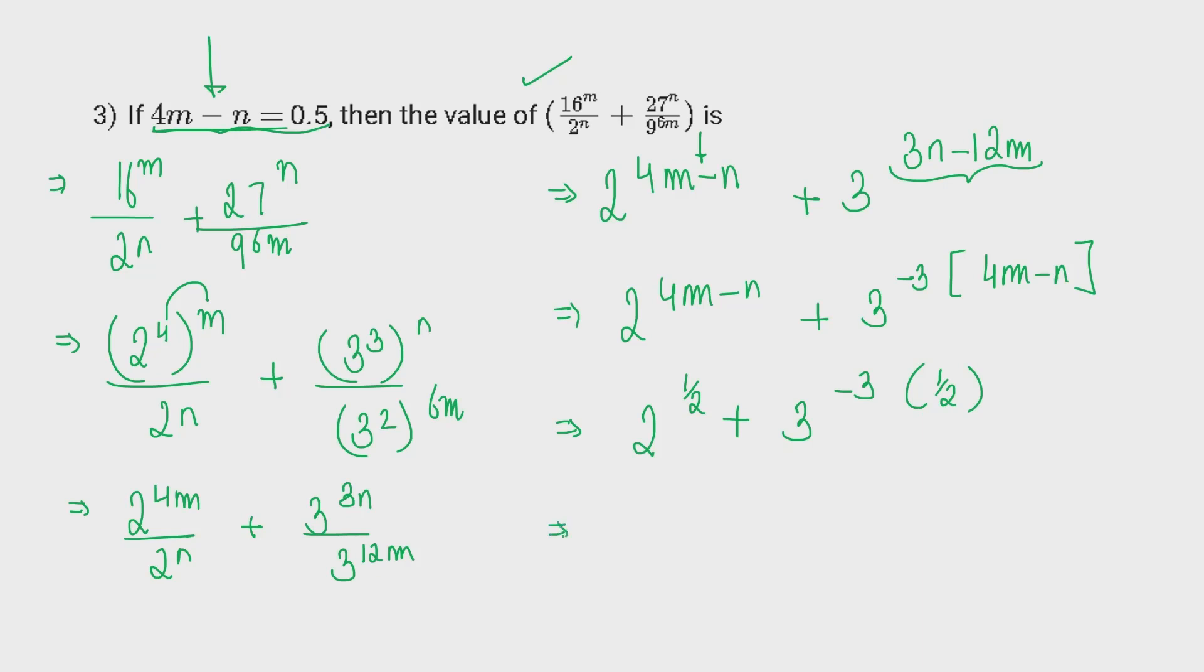Therefore, the final answer of this question is under root 2 plus 1 by 27 cube under root. That's all in this question.